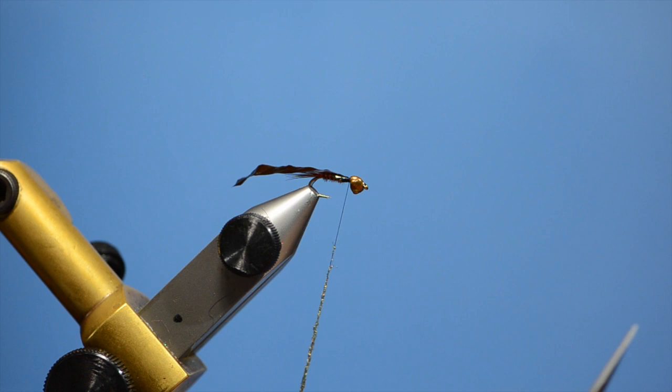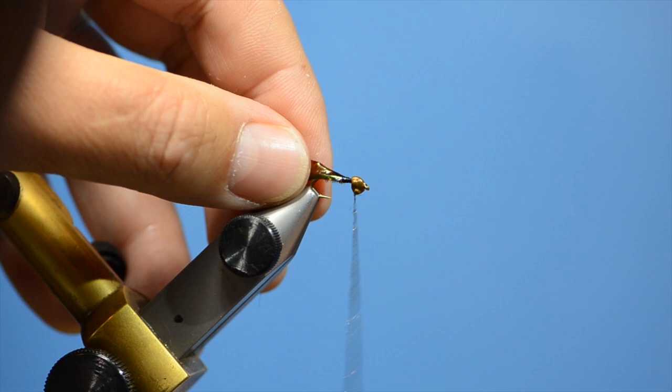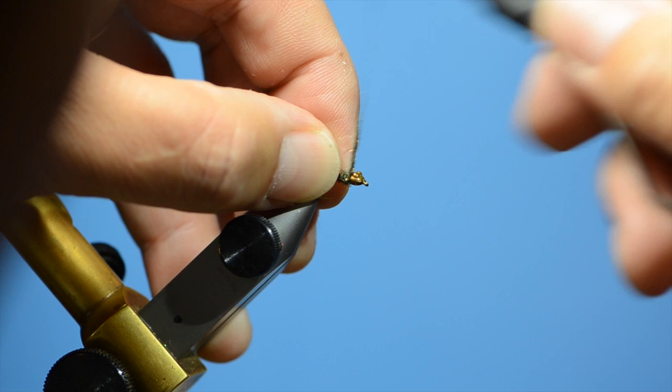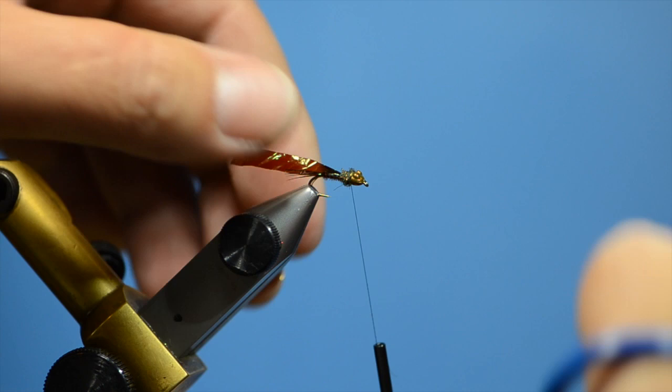So we can get these legs on our smaller nymphs. I have some ice dub there. I am going to start right up near the head. Get a little material laid in there just to get that head to hold still. Then I will figure out the size of my thorax based on that. Using that dubbing to kind of wedge that head into position. A little more dubbing at the base of the wing case.